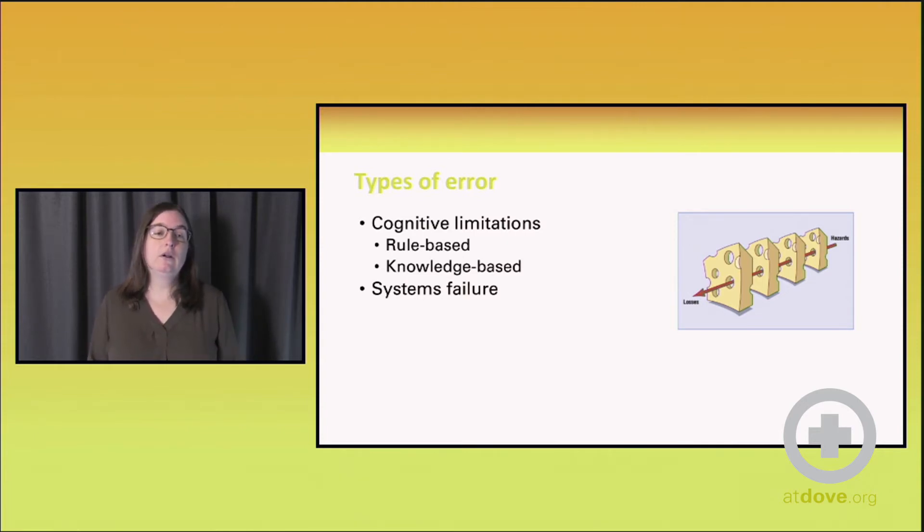When we look at the types of errors that are actually breaching our defenses and getting through these sequential slices of Swiss cheese, there are two categories. One is cognitive limitations, and that's really referencing human limitations.